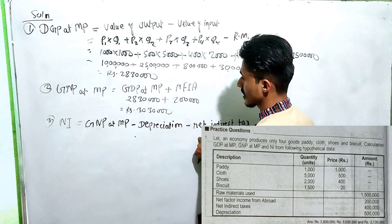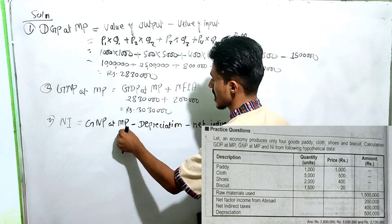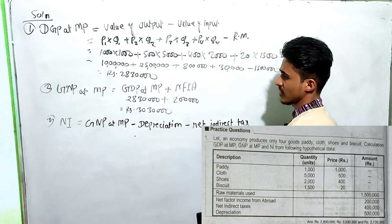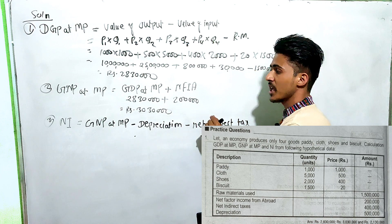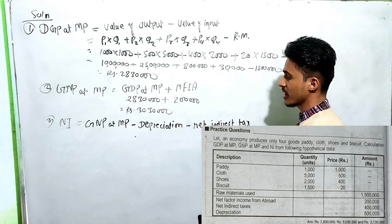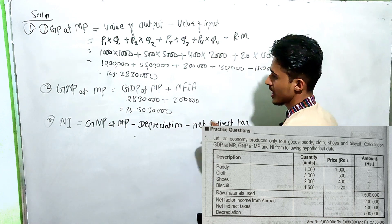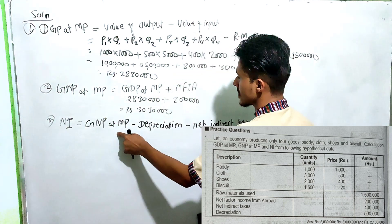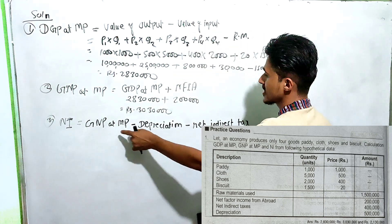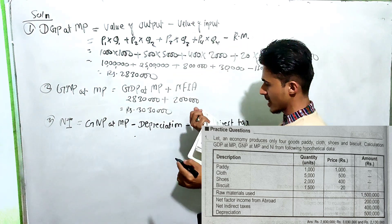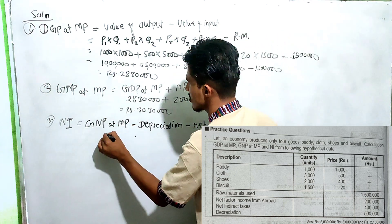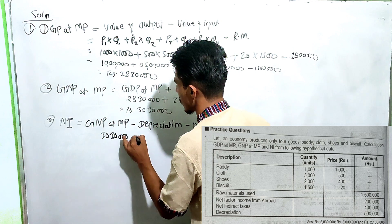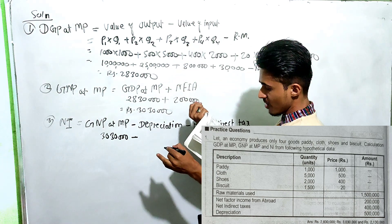We call it NNP at MP, then NNP at FC. NNP at MP minus Net Indirect Tax equals NNP at FC. The value is approximately 3,350,300,000.